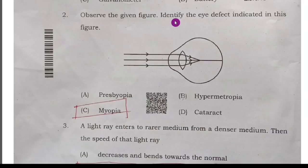Second question: observe the given figure, identify the eye defect indicated in this figure. By seeing the image you can understand that is myopia, option C is the right answer.